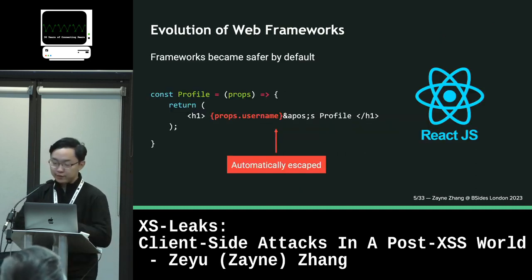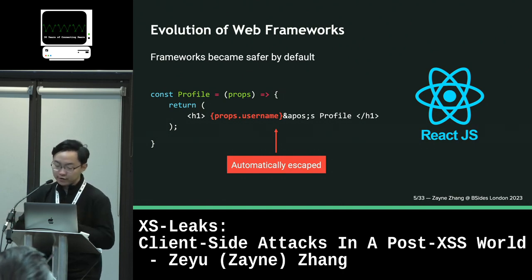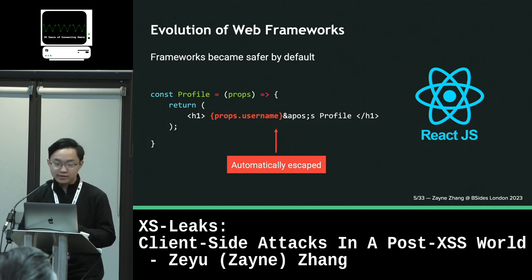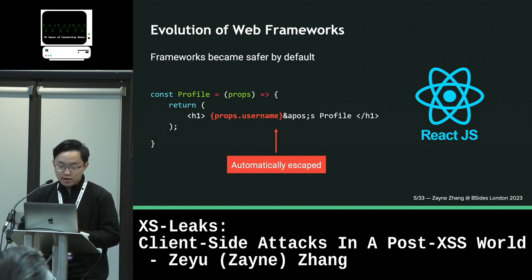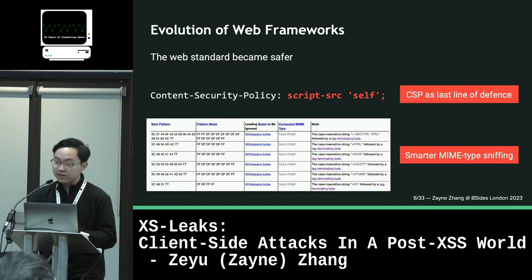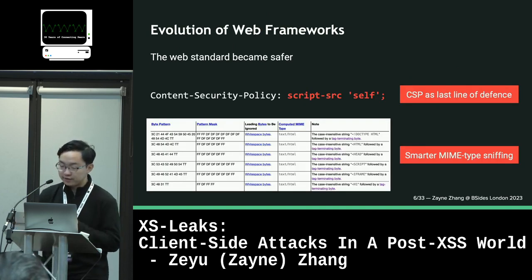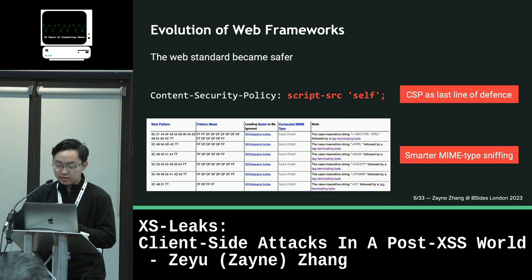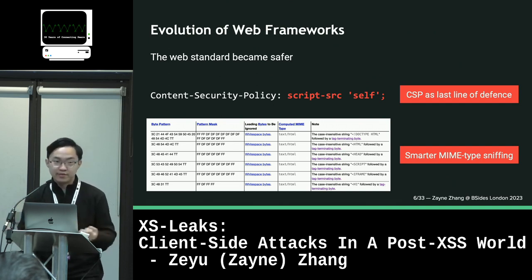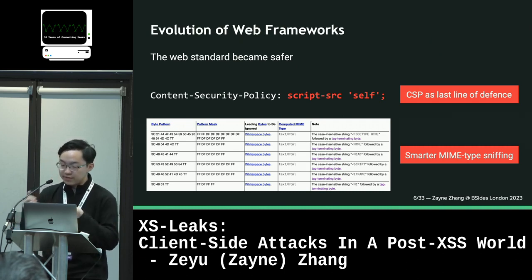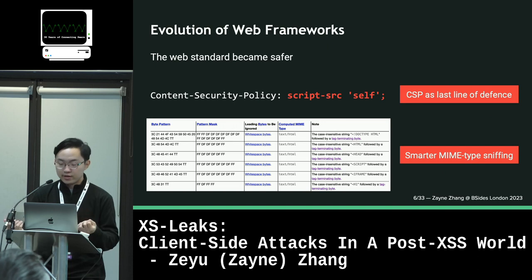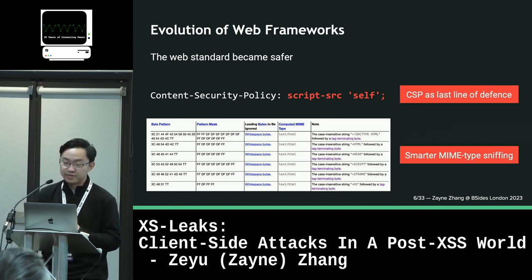Frameworks became safer by default. We have React, where embedded expressions get automatically escaped before being rendered, so it became basically safe by default. The web standard as a whole also became safer — we have things like Content Security Policy to act as a last line of defense against XSS, and browsers also became smarter about MIME-type sniffing. These are really good things because even if your application is coded insecurely, they can still save you from some attacks.